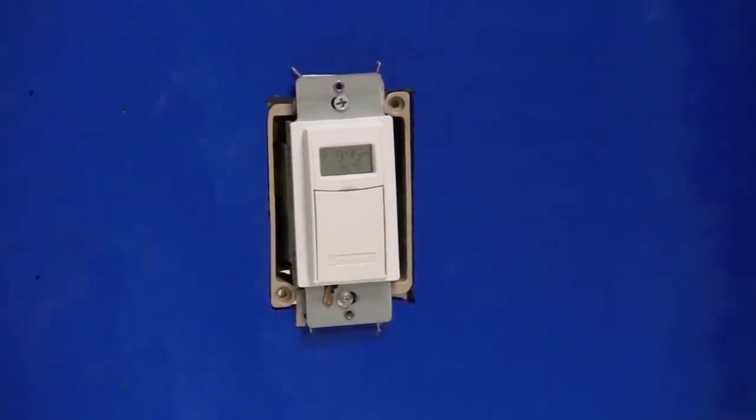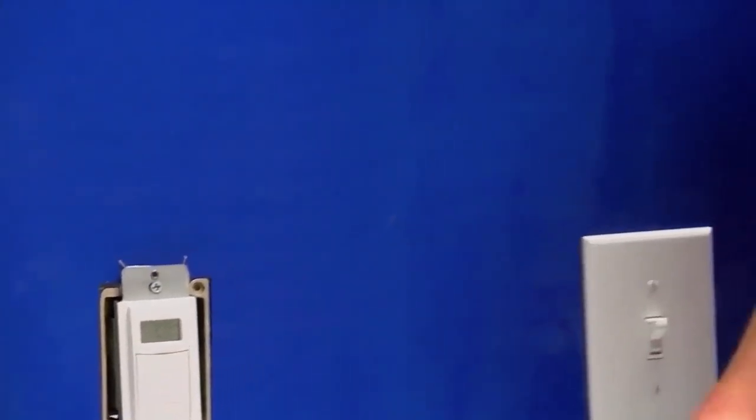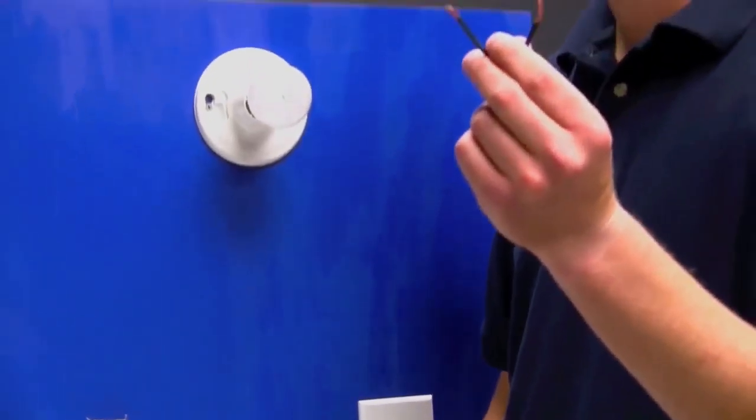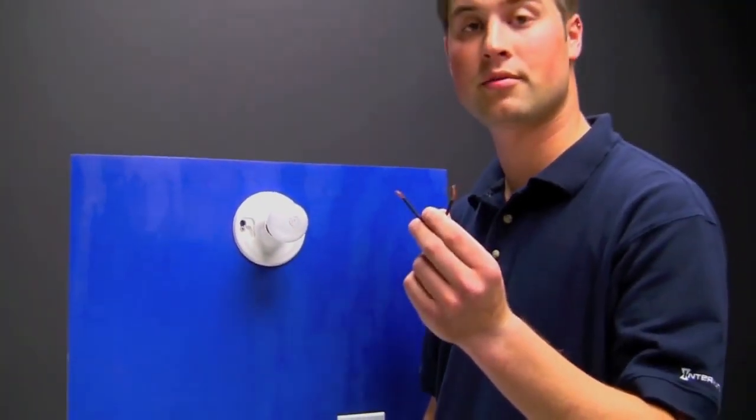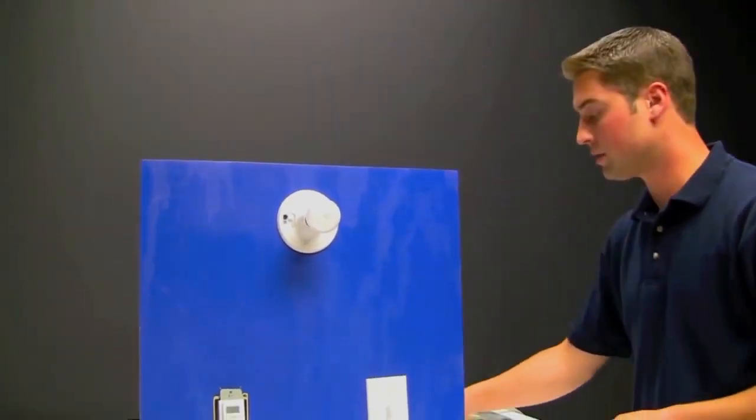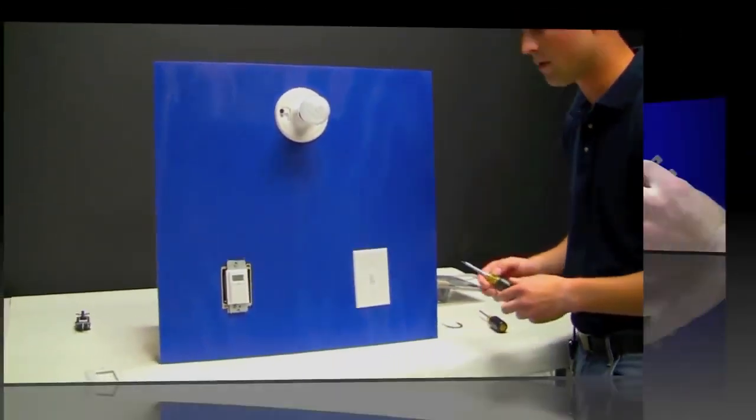Now that we've got the timer installed in the wall we're going to need to install the jumper wire which comes with the timer at the other three-way switch. The other switch that controls the same lights. We'll need to remove the other three-way switch from the wall.